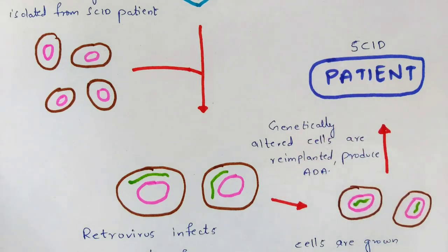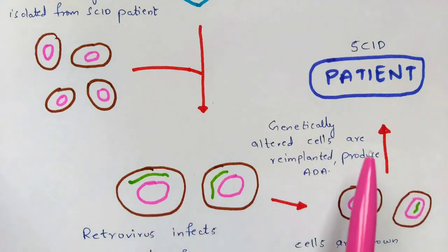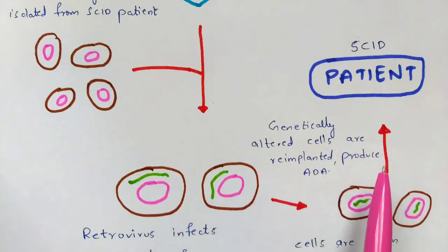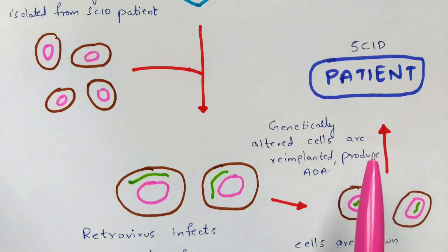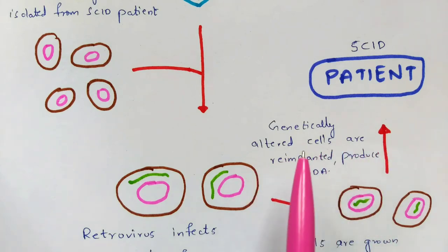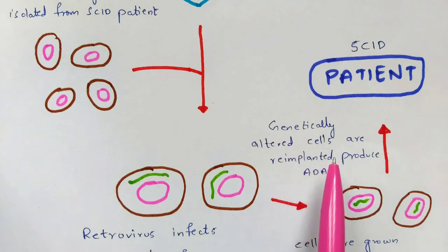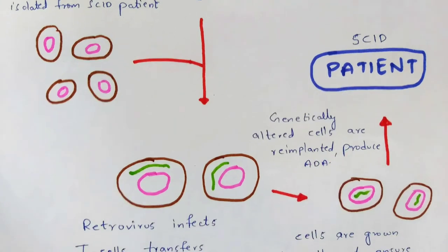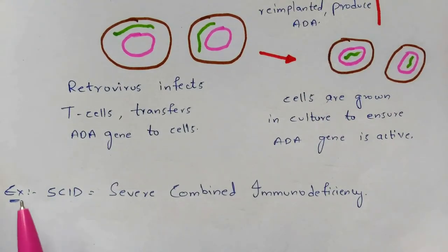The cultured, proliferated cells are implanted into the patient — Ashanti DeSilva, four years old, suffering from ADA-SCID. Once the cells are implanted, she will no longer suffer from this disease because it has been cured by the process of ex vivo gene therapy.